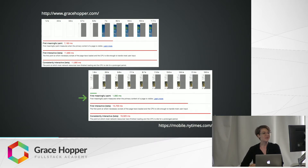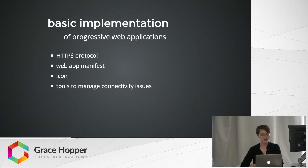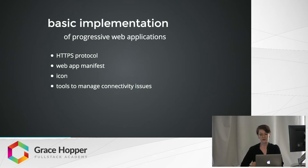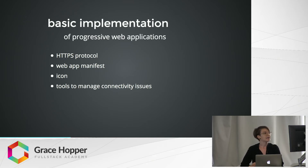So what do we need to implement a progressive web application? There are four key things. First, a progressive web application needs to originate from a secure connection, meaning we have to serve it over TLS using the HTTPS protocol. This is because progressive web applications use something called service workers, which are more susceptible to man-in-the-middle attacks. Second, we need a web app manifest and an icon — these are more important for mobile platforms, but they're worth taking a look at.